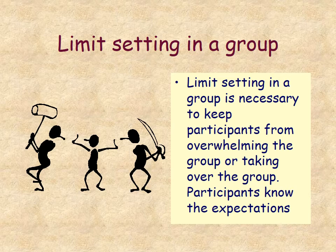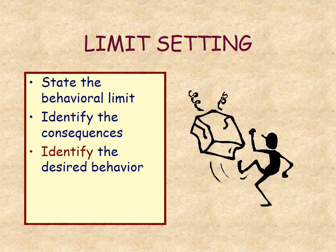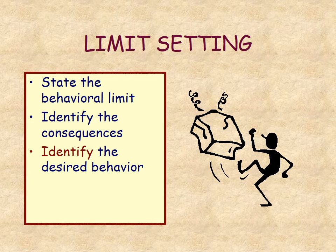An important skill in group leadership is setting limits — keeping participants on track and preventing one person from monopolizing things and making others feel they don't have a say. You have to communicate the expectations and ground rules for the group. You may need to ask someone to leave if necessary. It's appropriate to say someone needs to follow certain behaviors — you can't let someone start yelling, hitting, acting out, or being inappropriate in a group.